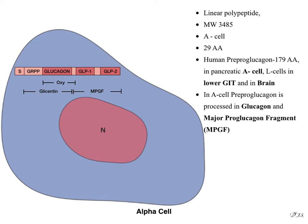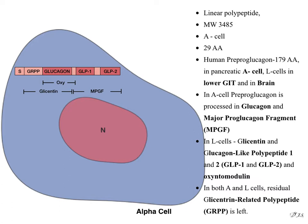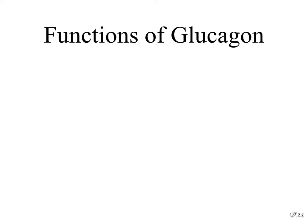In L cells, it is processed primarily to glicentin or polypeptide, plus glucagon-like polypeptides 1 and 2. Some oxyntomodulin is also formed. In both A and L cells, residual glicentin-related polypeptide is left.